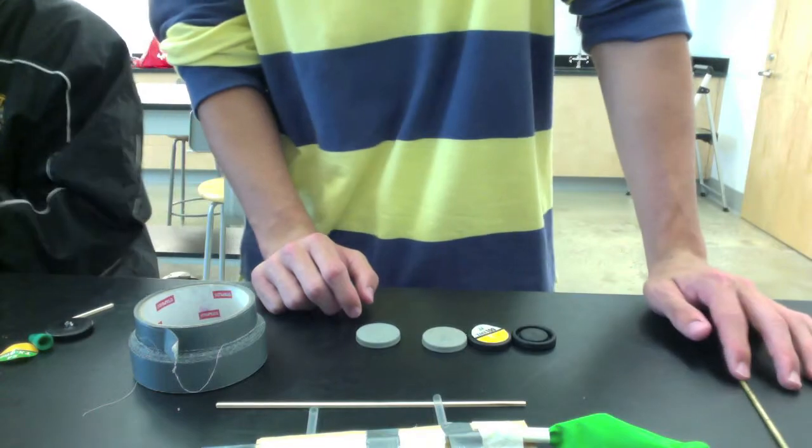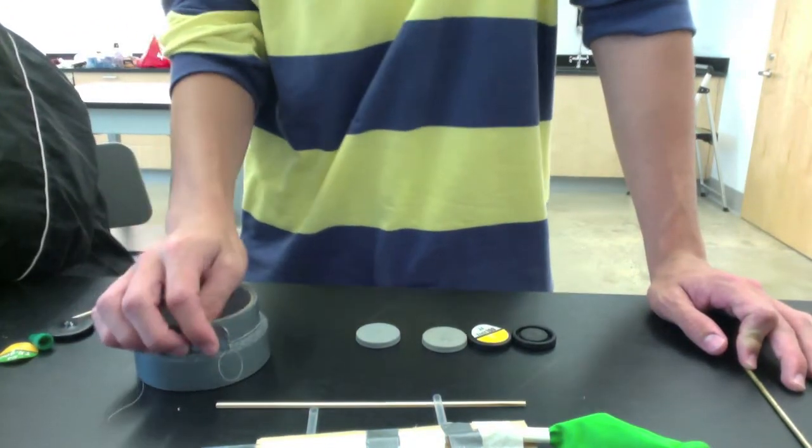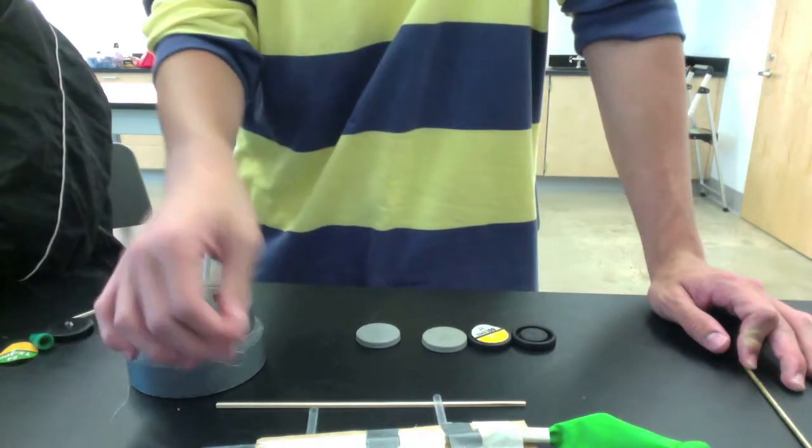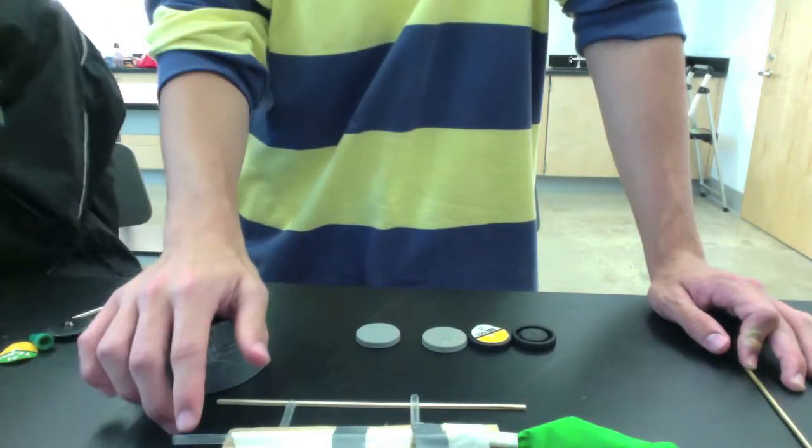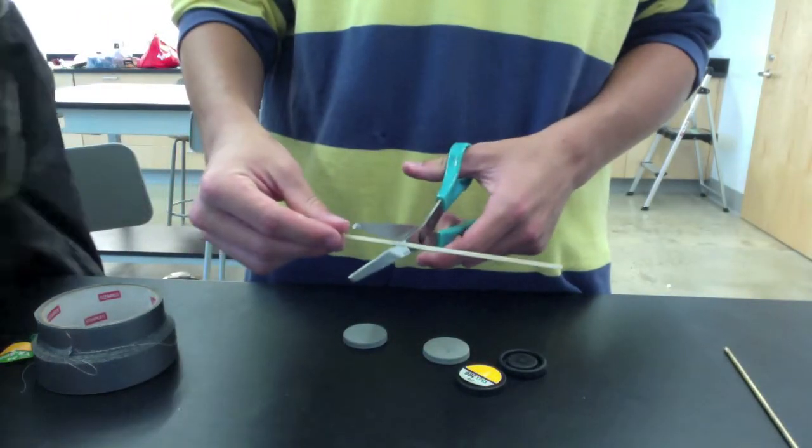You want to tape around the top of the balloon so it stays and air is concealed inside the balloon. You want to make sure that you can blow through the straw right here and that'll fill up the balloon.